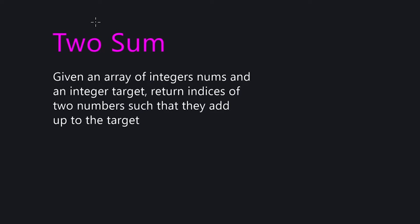We have an array that's given to us called nums. We're also given an integer called target. We have to return the indices of two numbers such that they both add up to the target.